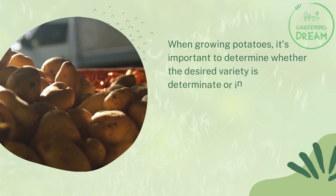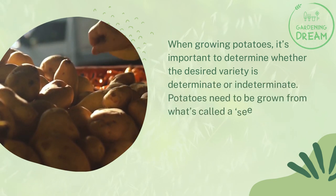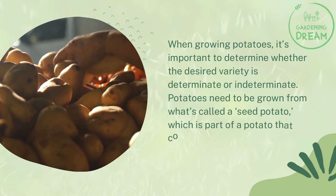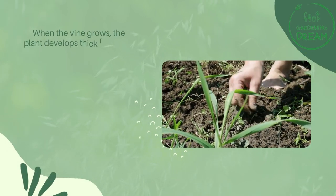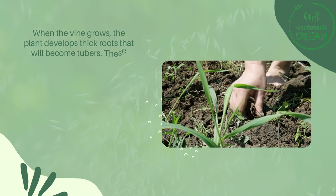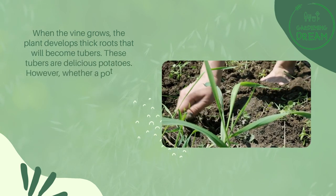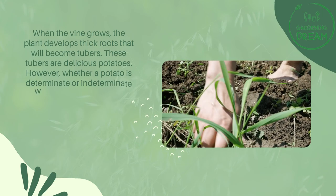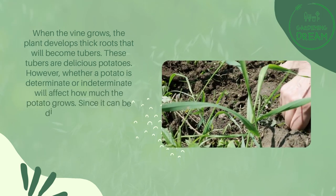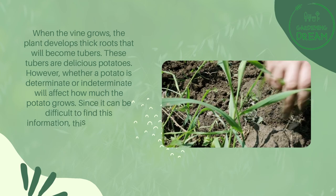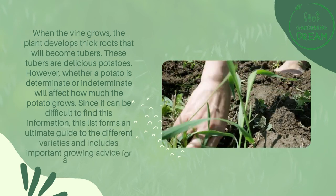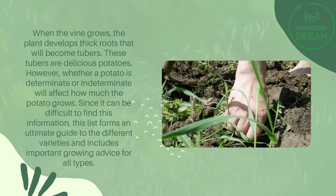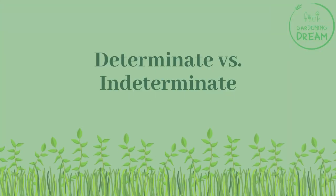When growing potatoes, it's important to determine whether the desired variety is determinate or indeterminate. Potatoes need to be grown from what's called a seed potato, which is part of a potato that contains an eye that will grow and become a vine. When the vine grows, the plant develops thick roots that will become tubers. Whether a potato is determinate or indeterminate will affect how much it grows, so this guide covers the different varieties and includes important growing advice for all types.